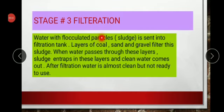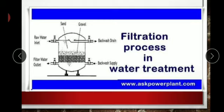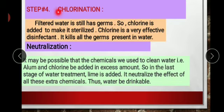The third stage is filtration. The flocculated water, which contains flocs and sludge, is sent into the filtration tank. Layers of coal, sand, and gravel filter that water — the sludge is collected in those layers while clean water passes through and comes out. After filtration, the water is almost clean, but it is not yet ready to use. This is the filtration process in water treatment.